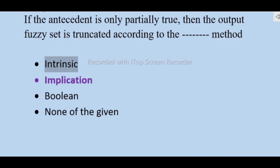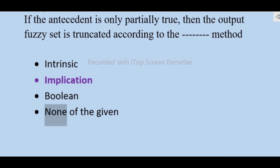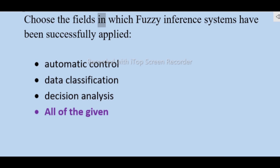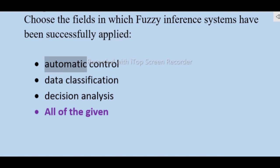If the antecedent is only partially true, then the output fuzzy set is truncated according to the implication method — not intrinsic, boolean, or none of the given.